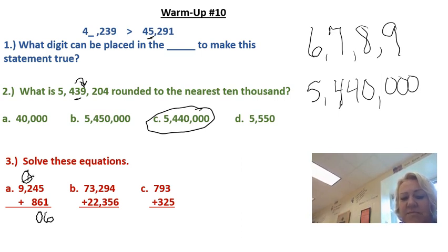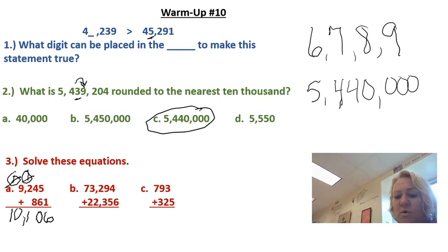Three plus eight is 11. I put my one down and I carry my one and circle it. One plus nine, I'm done with that one, is 10. Your answer should be 10,106.